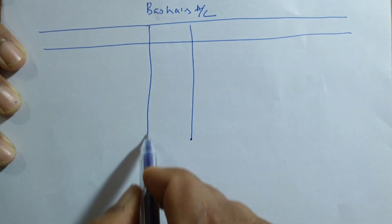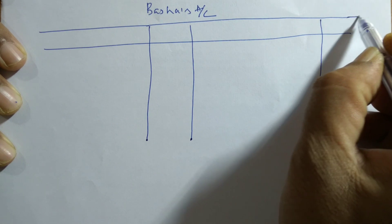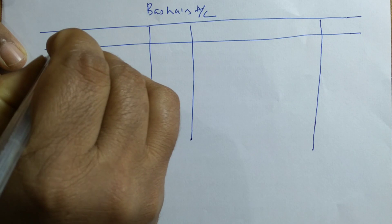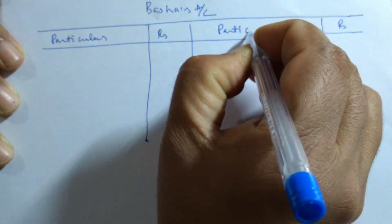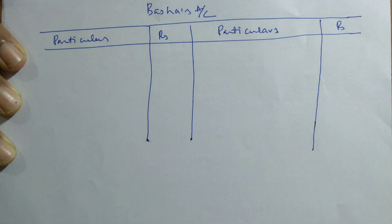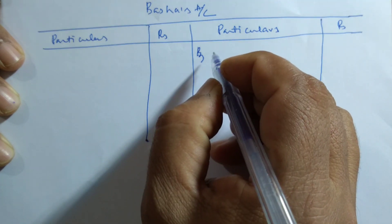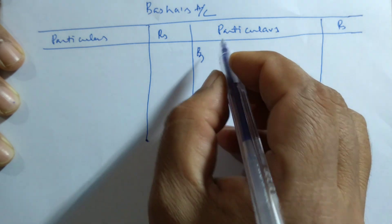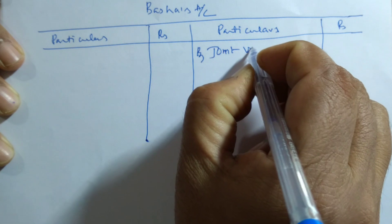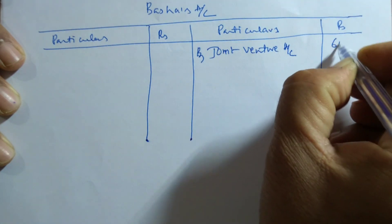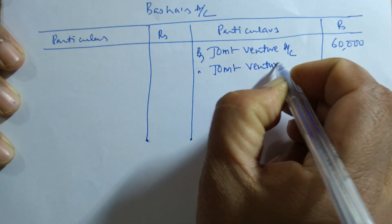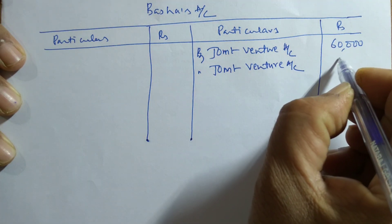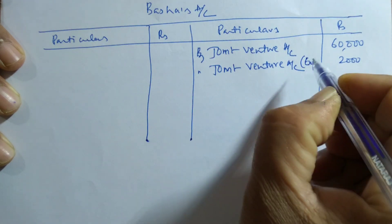Basha's account is prepared with the help of the joint venture account. Whatever items relating to Basha are entered in the joint venture account must be taken to the credit side of Basha's account. In this problem, the first item in the joint venture account is 'to Basha's account' rupees 60,000 — Basha has provided goods worth rupees 60,000 for the joint venture. Apart from this, Basha has incurred expenditure of rupees 2,000 for expenses on those goods — that should also be taken.